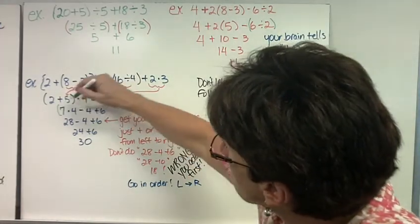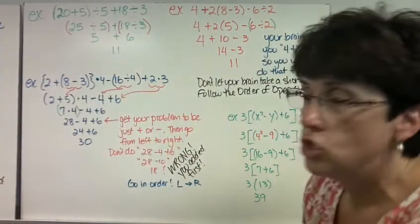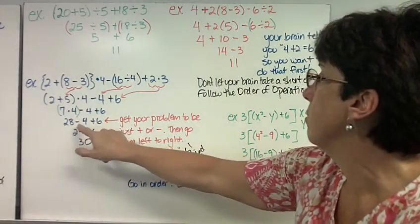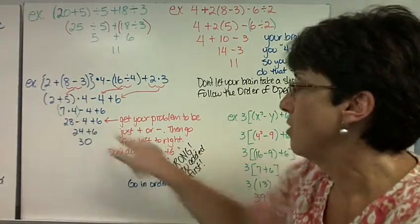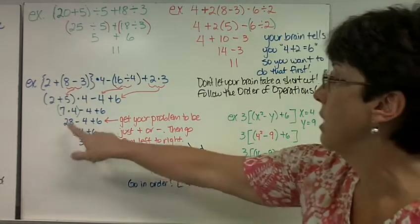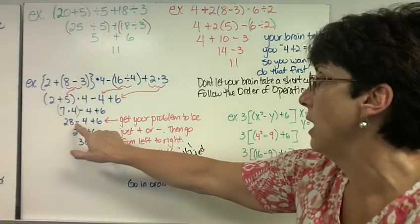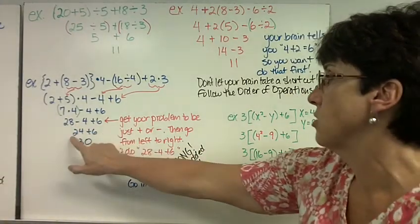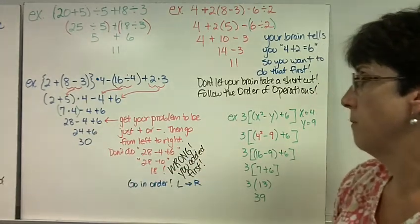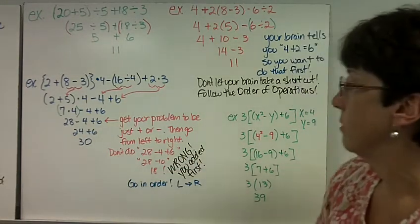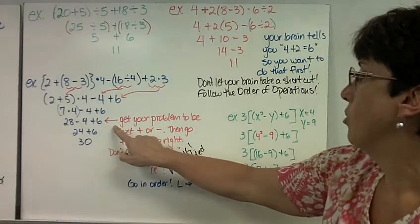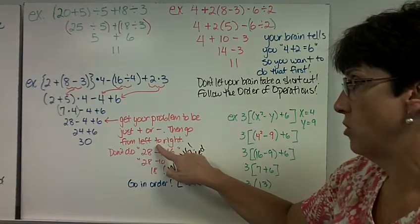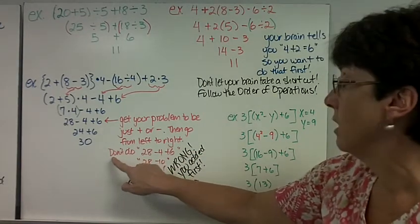I'm going to put parentheses around the 7 times 4. 7 times 4 is 28 minus 4 plus 6. Now the only thing I have is addition and subtraction, so I go from left to right. Subtraction comes first. 28 minus 4 is 24. 24 plus 6 is 30. You want to get your problem to just be adding or subtracting, then go from left to right. Don't add first automatically.